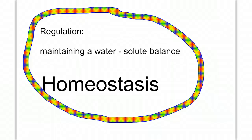All day, every day, our fluid levels are in a state of flux. The composition of our blood changes, the interstitial fluid that bathes our tissues and cells changes, and the contents of our cells change. We gain and lose water, and we gain and lose solutes such as salts, ions, minerals, sugars, and vitamins.